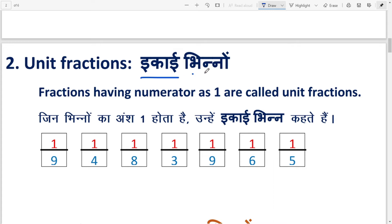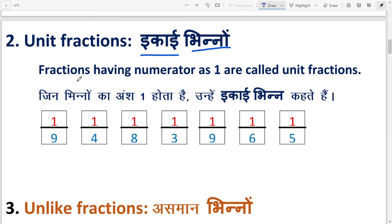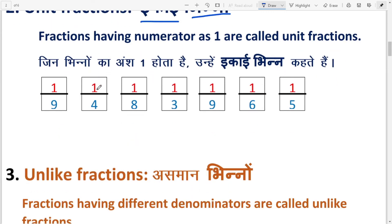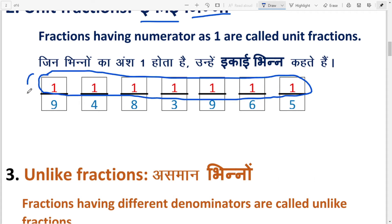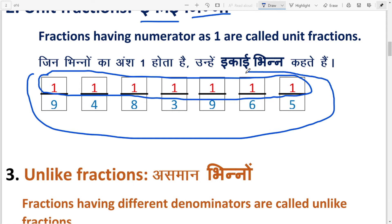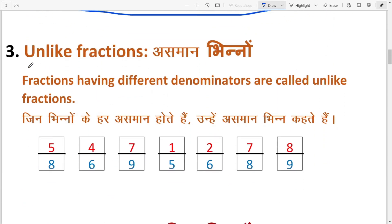Next: Unit fractions, meaning 'ikai bhin'. Fractions having numerator as one are called unit fractions — जिनका अंश एक होता है उन्हें इकाई भिन्न कहते हैं. For example: 1/9, 1/4, 1/8, 1/3. The numerator of all these is one, so these are unit fractions.